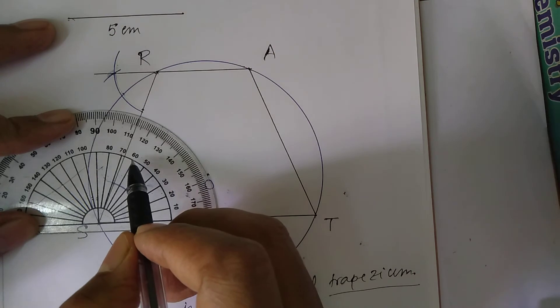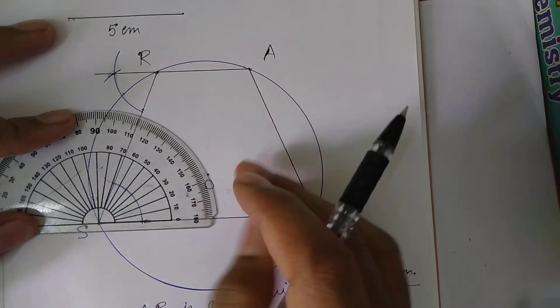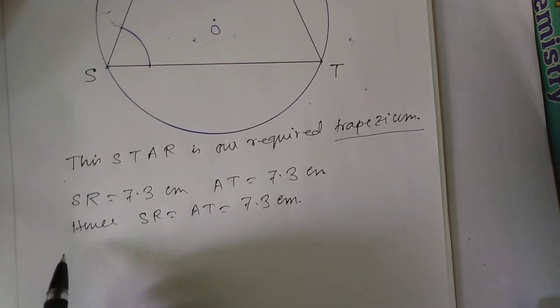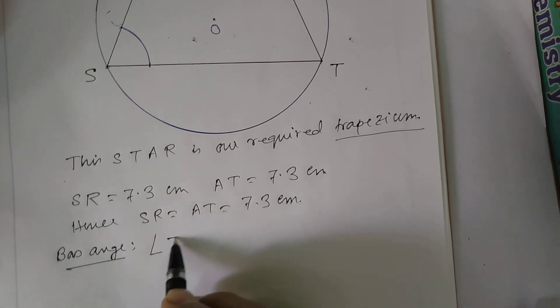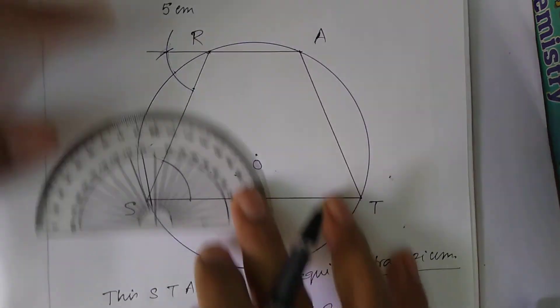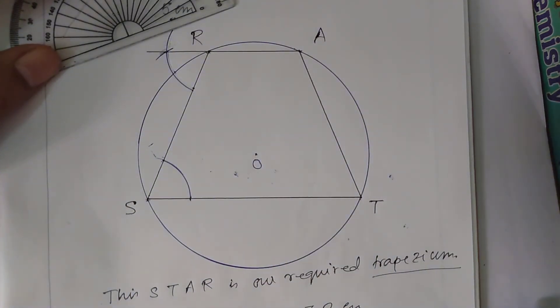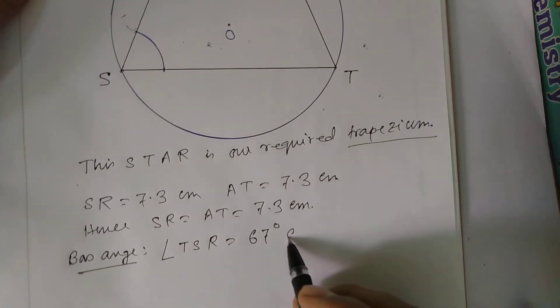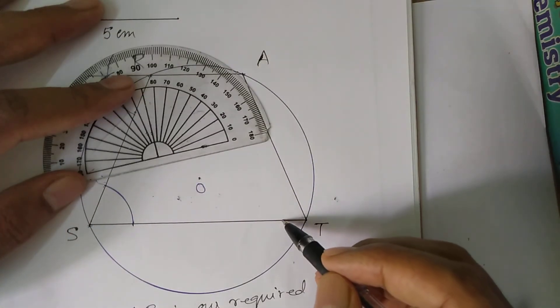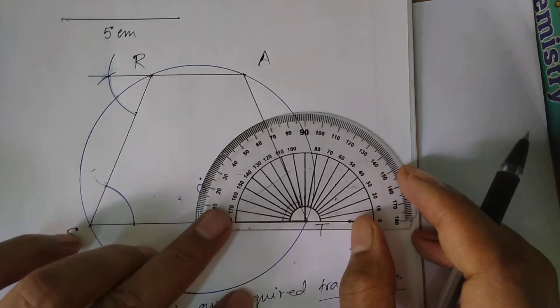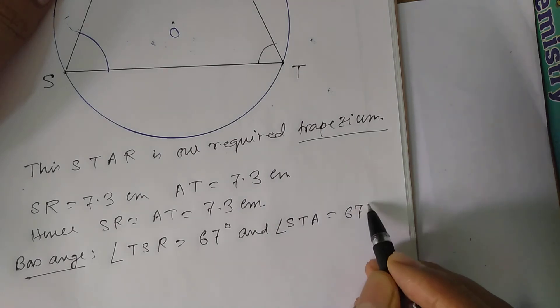Hence SR equals AT equals 7.3 centimeters. Again, measure its base angle. That is 67 degrees. Base angle, angle TSR equals 67 degrees. And angle STA, same, that is 67 degrees.